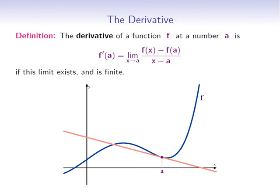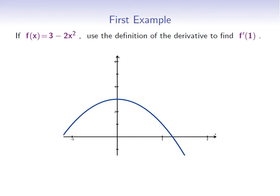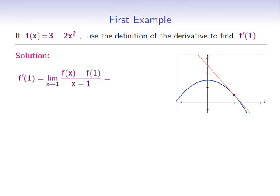Now let's proceed to our first example. If f(x) = 3 − 2x², use the definition of the derivative to find f'(1). Here's the graph of the function f, and here's the point that corresponds to x = 1. Finding the derivative at 1 means finding the slope of the tangent line at that point. To compute the derivative we use the definition: f'(1) = lim as x → 1 of [f(x) − f(1)] / (x − 1).